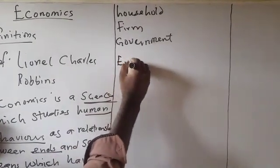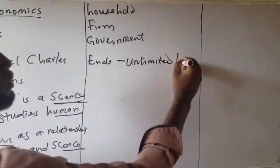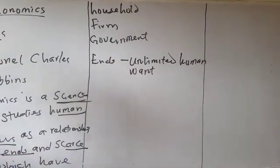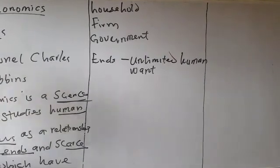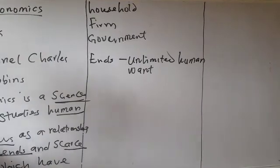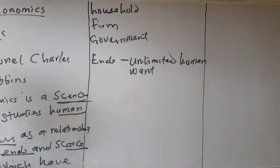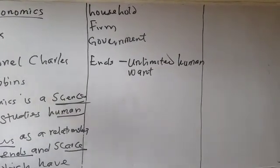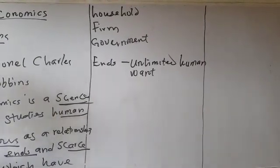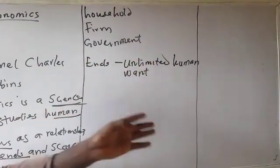Ends here simply means unlimited human wants. In economics, we say that human wants are unlimited, or sometimes we say they are numerous, because they are many. When you wake up in the morning, you always have the list of things that you want. But there's always this problem of scarcity that you can never have enough to solve everything you need at a particular period of time.